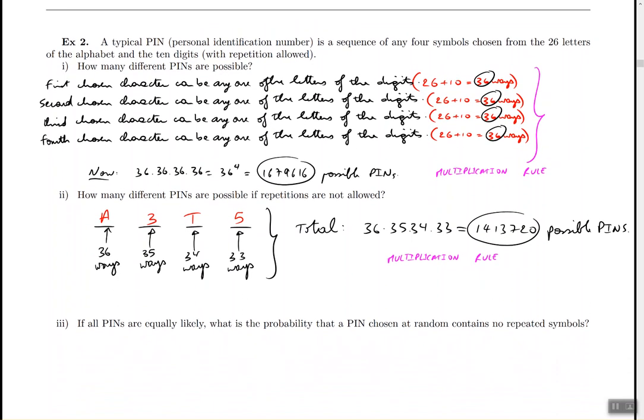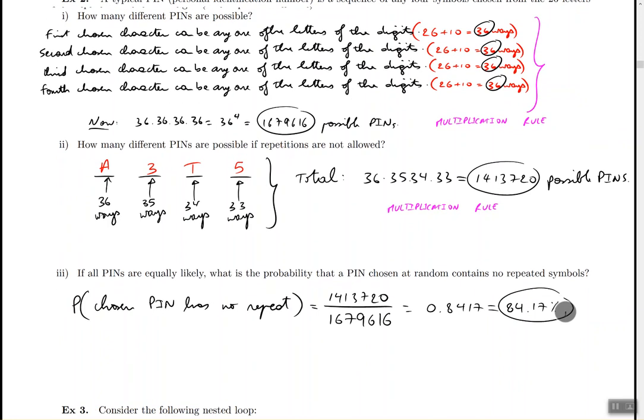So what about part three? What's the probability that a PIN chosen at random contains no repeats? So the probability of the chosen random PIN has no repeats. So what I have to do in this case is the following. I have to basically calculate how many PINs there are in this universe without repeats and divide it by the total number of PINs with or without repeats. And that's pretty straightforward. We already calculated both of those numbers. The first number is 1,413,720. That's how many PINs have no repeats and divided by the total number of PINs in this universe, which was calculated in part one of this problem. So let's divide them out and see what happened. So in general, there are 84.17% chance that if you choose a random PIN, you're going to end up with one that has no repeating symbols. And that's the answer. And that's the end of the problem.